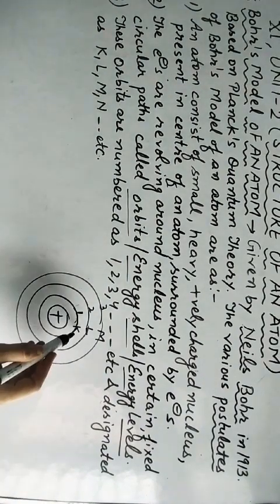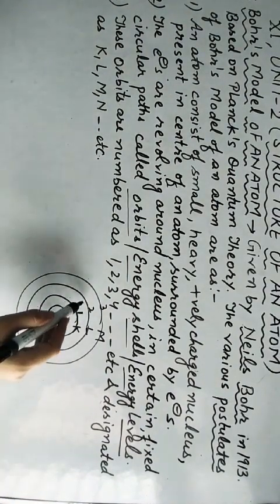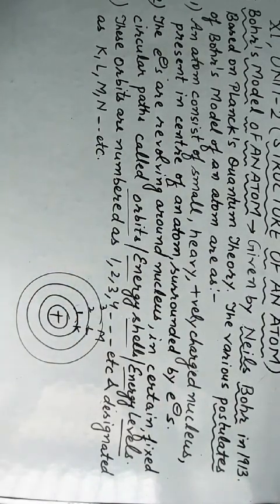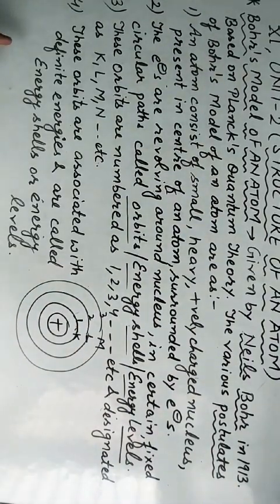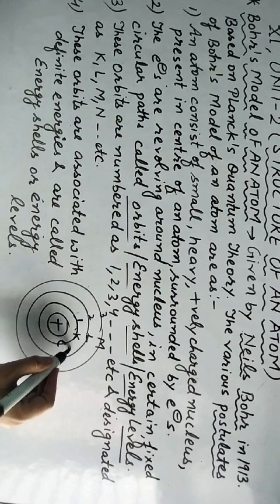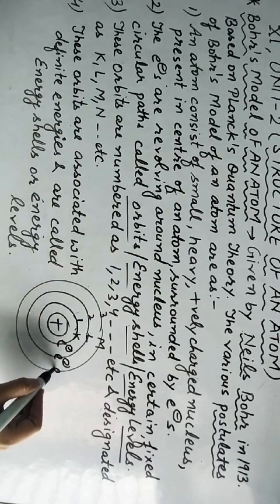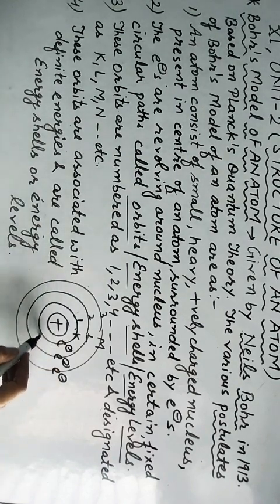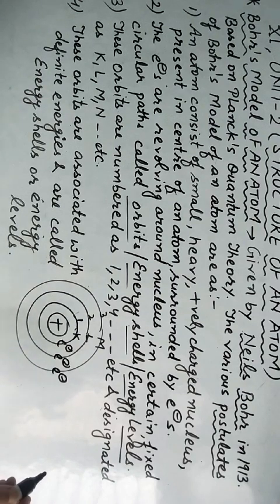These orbits are associated with definite energy, and that is why we call them energy shells and energy levels. Since the orbits have definite energy, the electrons within these orbits also have definite energy. When an electron is present in a particular orbit, it has a definite amount of energy — it neither loses energy nor gains energy.